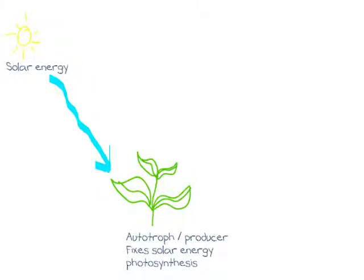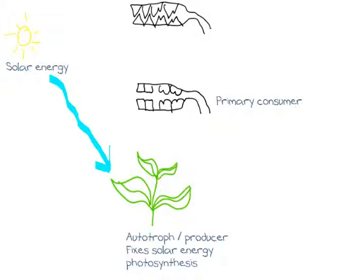This energy is then passed along the food chain by being eaten or consumed, first by a herbivore or primary consumer, and then by a secondary consumer or carnivore, and this would continue up the food chain.